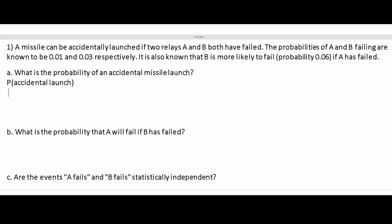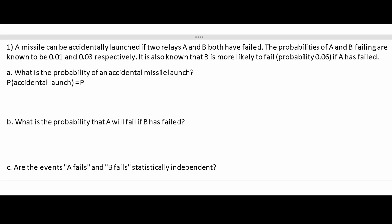Well, we can write this as P failing. This is the probability of a launch. The probability of a launch is when A fails and B fails. So if both of them fail, the missile is going to launch.